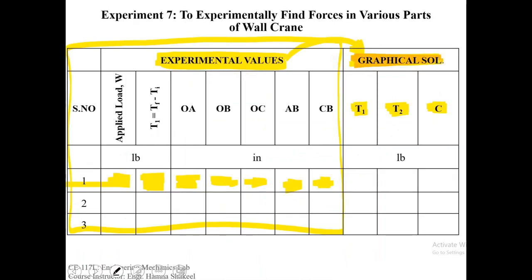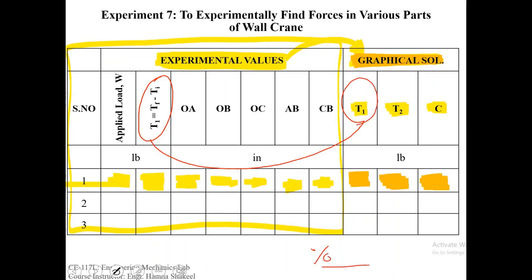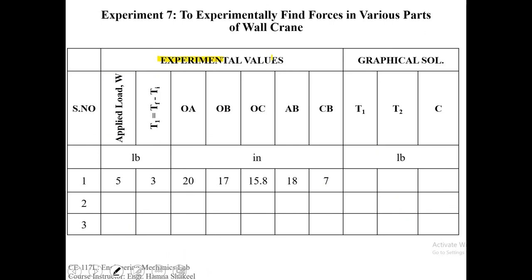Now you have the magnitude of all forces in all members of the crane. Fill in the table with the magnitude of T1, T2, and C. Once you have both experimental and graphical values, compare the experimental T1 with the graphical T1 and find the percentage error between the two. Repeat this for a second and third trial to conclude experiment number 7. Use these experimental values to find the graphical solution for T1, T2, and C as a class activity — the solution will be uploaded on Google Classroom.